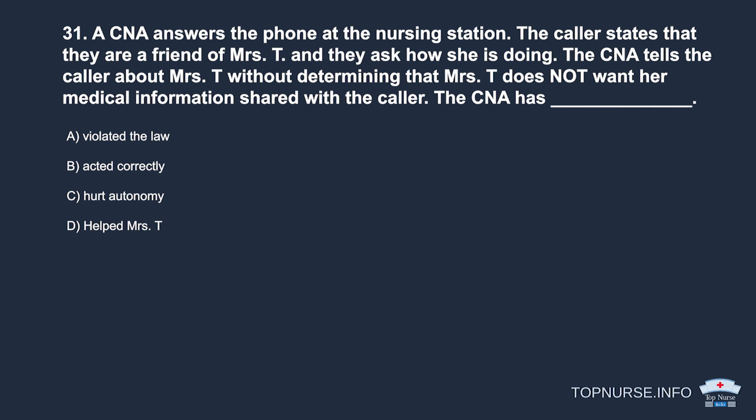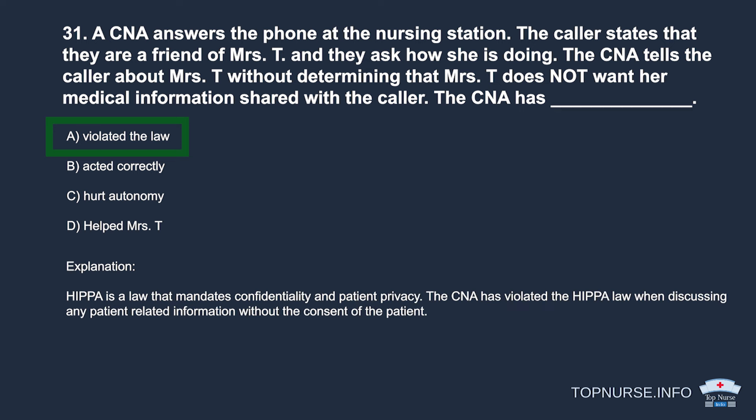Question 31: A CNA answers the phone at the nursing station. A caller states they are a friend of Mrs. T and asks how she is doing. The CNA tells the caller about Mrs. T without determining if she consented. The CNA has: a. Violated the law. b. Acted correctly. c. Hurt autonomy. d. Helped Mrs. T. Correct answer: a. Violated the law. HIPAA mandates confidentiality and patient privacy. The CNA violated HIPAA by discussing patient information without the patient's consent.